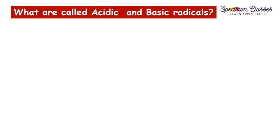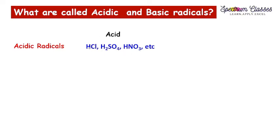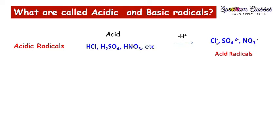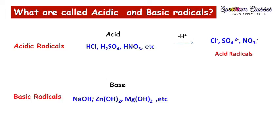What are acid radicals? First, understand acids — those having displaceable H⁺ ions, for example HCl, H₂SO₄, HNO₃, etc. If we remove H⁺ from these acids, we get chloride ion, sulfate ion, and nitrate ion. These are called acid radicals, and what we understand is that acid radicals carry a negative charge.